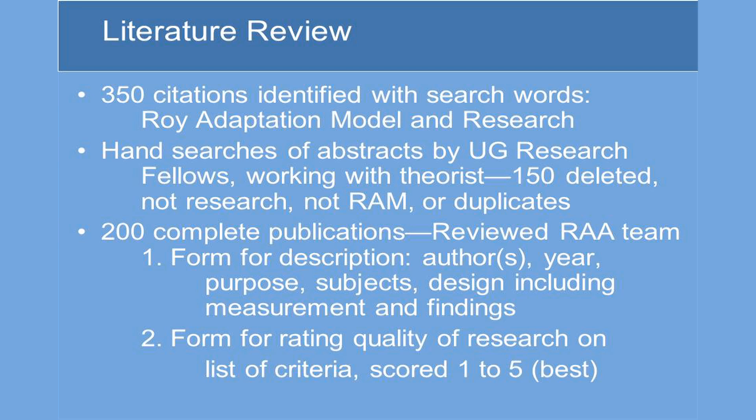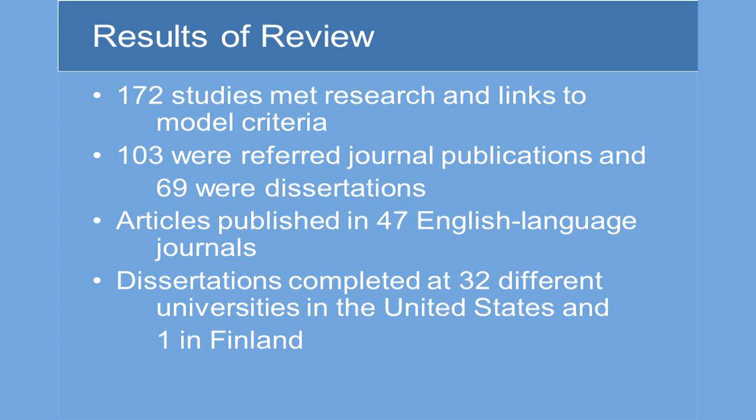The review used two forms: one for description — including authors, year, purpose, subjects, design including measurement, and findings. Two, a form for rating the quality of the research on a list of criteria, scored from one to five, with five being the best. As a result, 172 studies met the criteria for both research and links to the model.